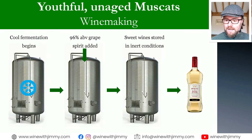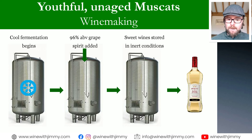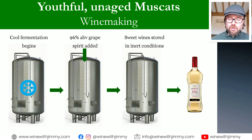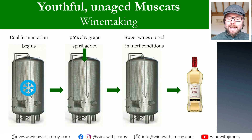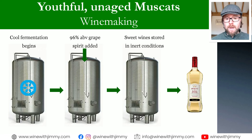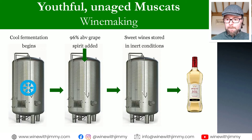The winemaking process: fermentation begins cool in vat, typically at about 2% ABV. It is then stopped by adding grape spirit at 96% — this is your fortification. That stops the fermentation early, meaning you have a lot of residual sugar, typically over 100 grams per litre. It will then be stored in inert vessels using gas to protect the wine and keep it away from oxygen. Eventually it will be bottled. This is what produces the non-oxidised, youthful, unaged expression of Muscat Beaumes-de-Venise.